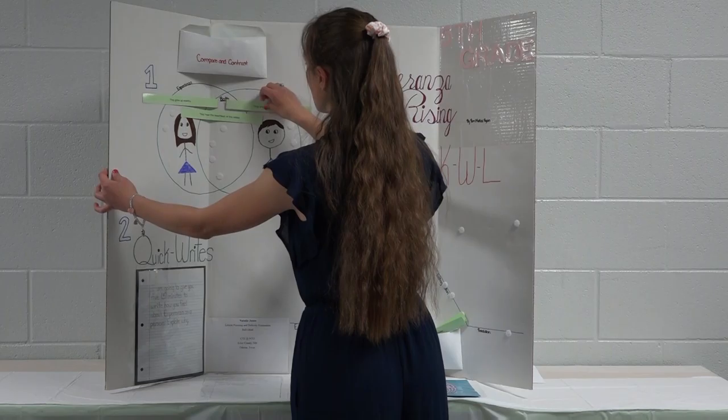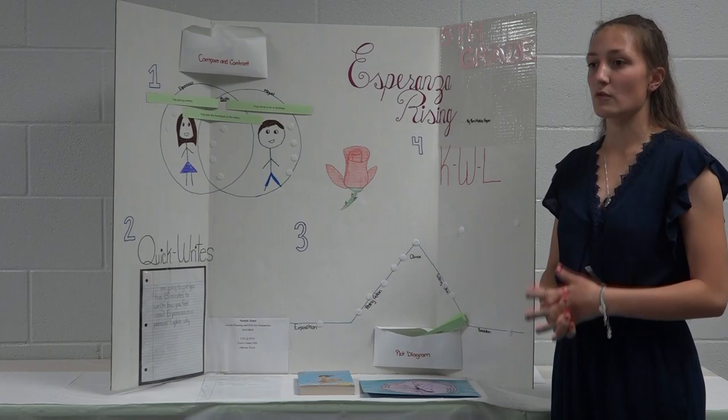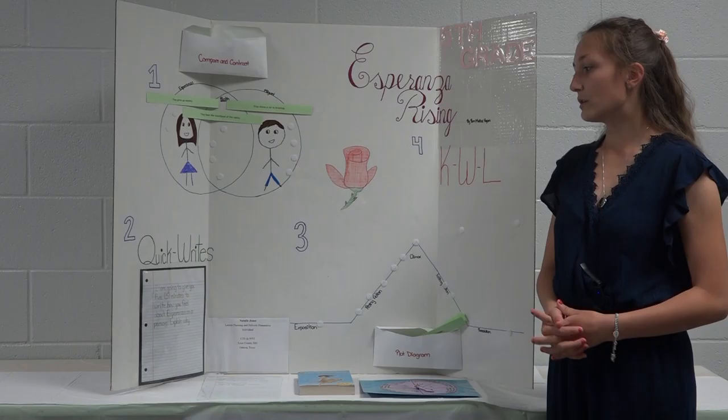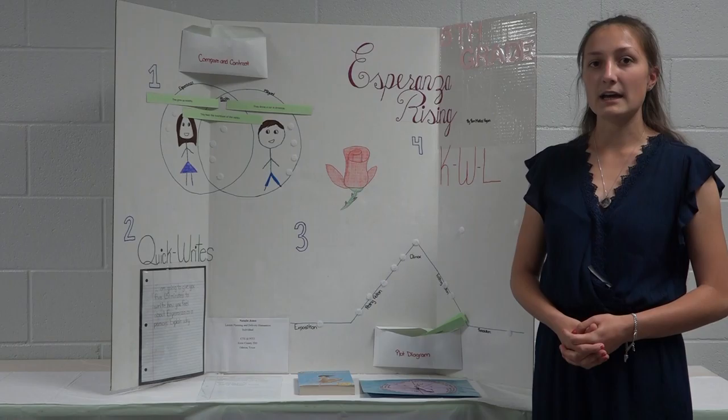After completing the Venn diagram, the students would then move on to the quick write activity. The prompt asked of them is: I'm going to give you five minutes to write how you feel about Esperanza as a person. Explain why.